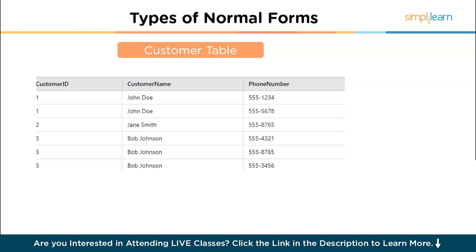Same domain names: all values in the phone number column are consistent in format and type — all are phone numbers. The columns customer ID, customer name, and phone number have unique names satisfying that requirement. The order in which the rows appear does not matter as the data's meaning and integrity are preserved. By applying these rules, the table now conforms to the first normal form, eliminating redundancy related to phone numbers and ensuring data is stored in a more organized and efficient manner.